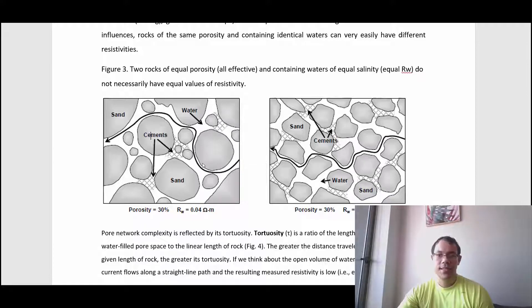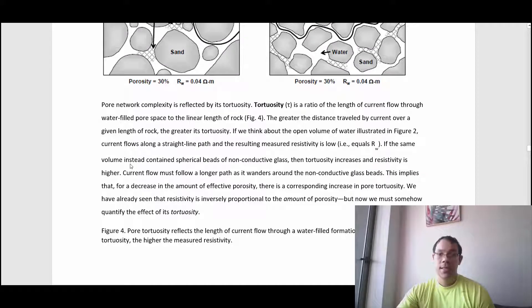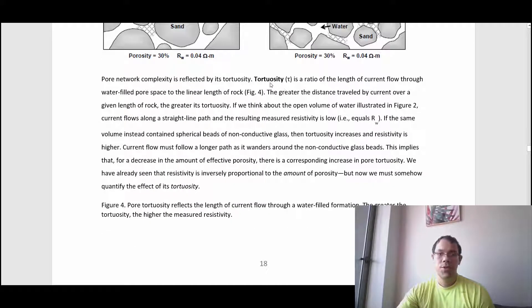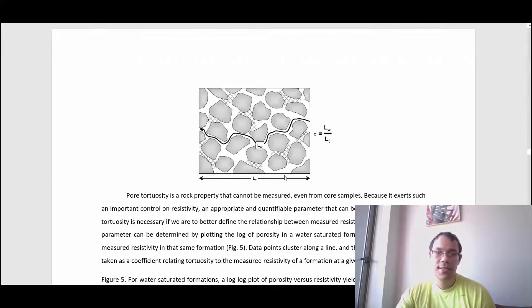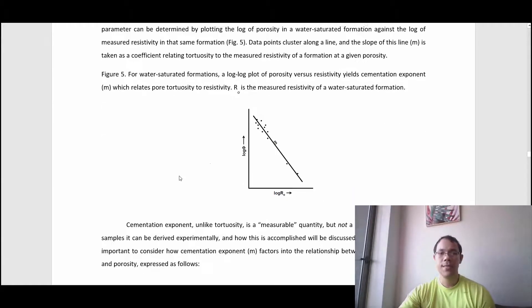In this one, the current has to move like this. In this one, it has to move like this. Here's the concept: tortuosity is a ratio of the length of current flow through water-filled pore space to the linear length of the rock. It's better to express it like this. If you compare the path that current could flow if it were free space, just like a straight line, and what happens in reality, like current has to go through all the pore space, that is tortuosity.